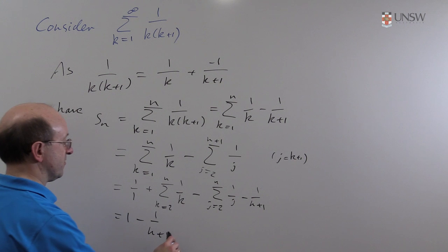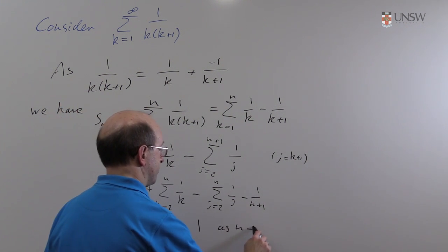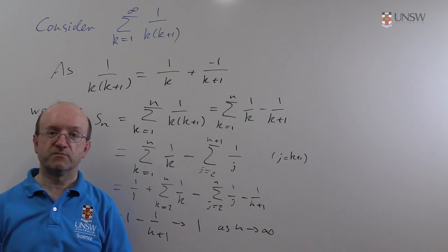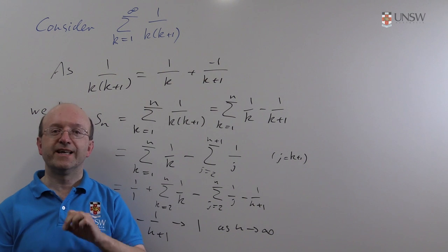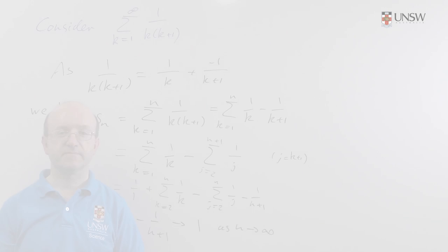And as n goes to infinity, that goes to 1. So that is the sum of that series. Remember the definition of the sum of the series is it's the limit of the sequence of partial sums.